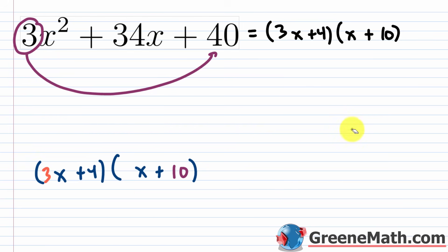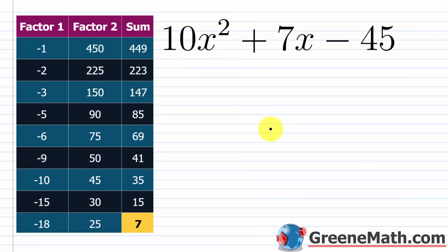Removing the intermediate step, you have (3x + 4)(x + 10) — matching the AC method result. The method is faster but has pitfalls: students often forget the divide step, or forget to pull out a GCF at the start. With the AC method you can catch mistakes, but with slide and divide you'll just get the wrong answer. Now let's look at a second example, and after that I'll show the substitution proof.